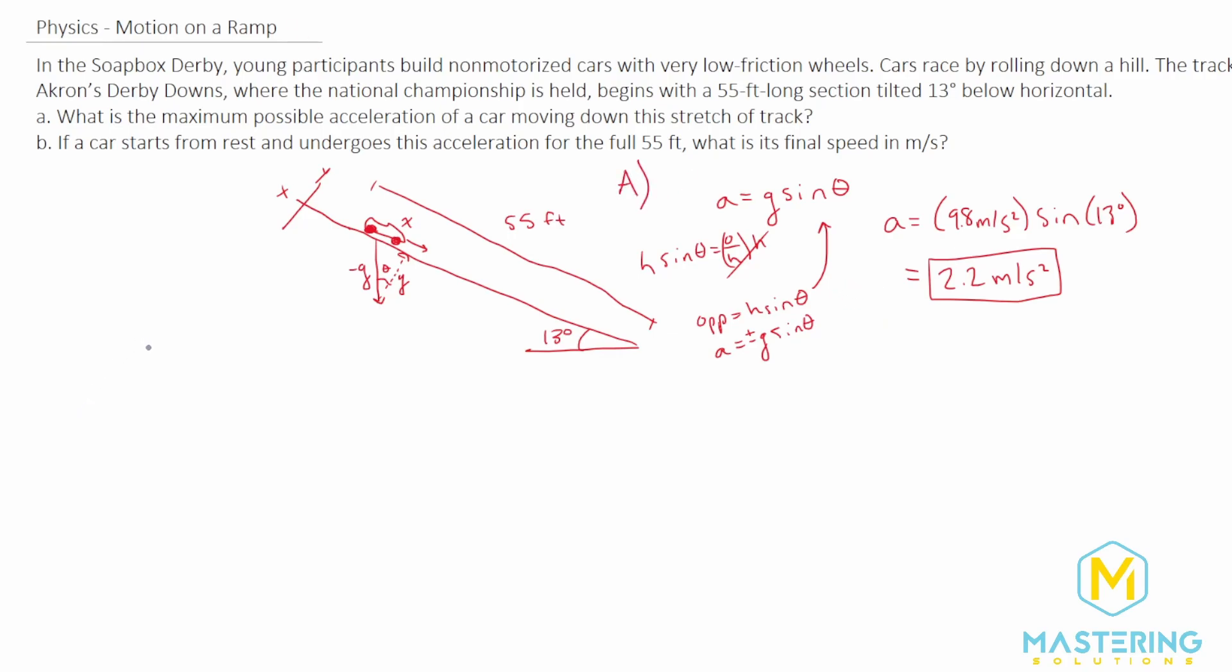Now for part B they tell us that if a car starts from rest and undergoes this acceleration for the full 55 feet, what's the final speed? For this we'll be using kinematic equations. We'll be using v final squared equals velocity initial squared plus 2 times a times delta x. We're using this because we don't have any kind of time given at all, so this is the only kinematic equation that doesn't include time in it.